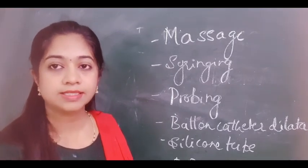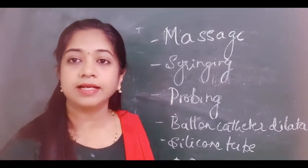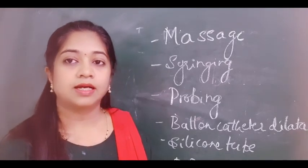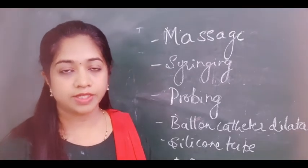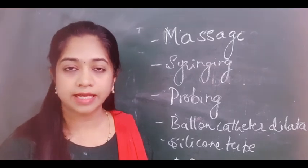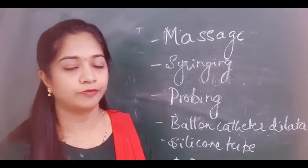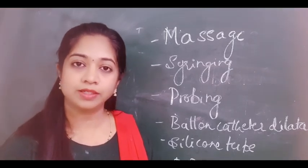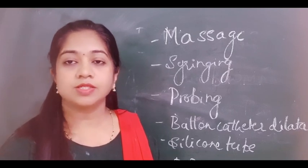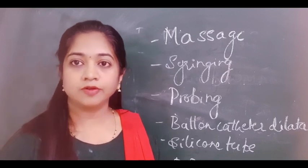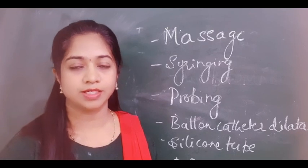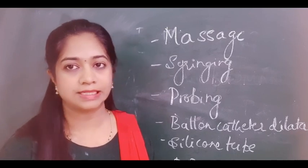If you don't treat congenital dacryocystitis, the child can have repeated conjunctivitis, or even corneal infections leading to corneal ulcer formation, and the sac can go into mucocele formation. So it is better to intervene in these children at the earliest. In the next video, I will be dealing with acute and chronic dacryocystitis followed by DCR surgery.